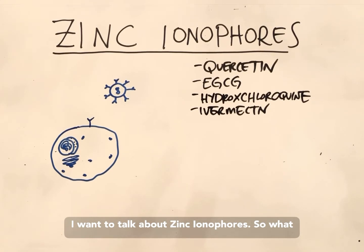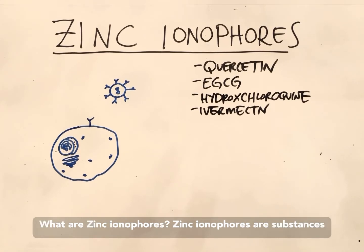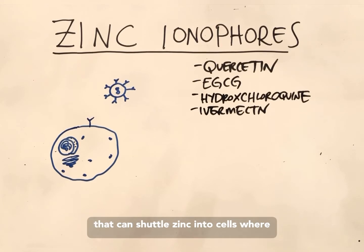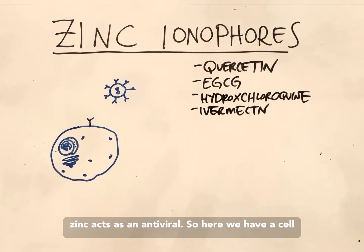What are zinc ionophores? Zinc ionophores are substances that can shuttle zinc into the cell, where zinc acts as an antiviral.